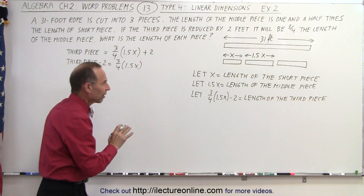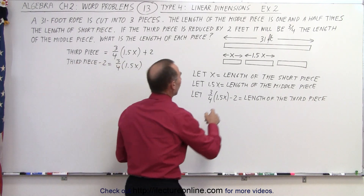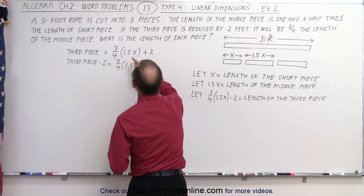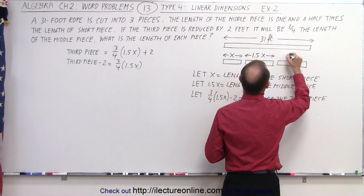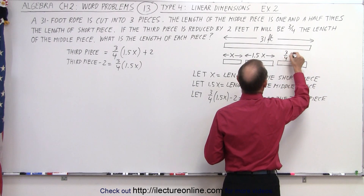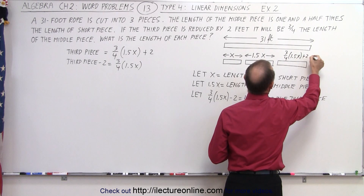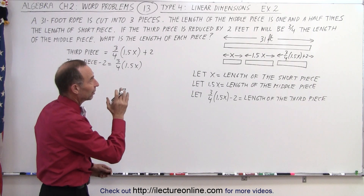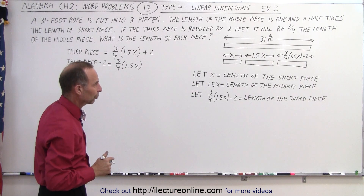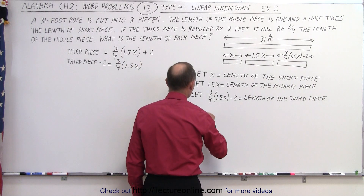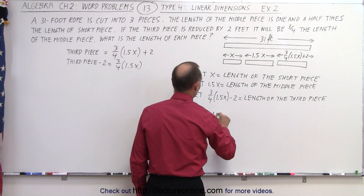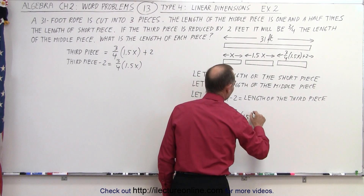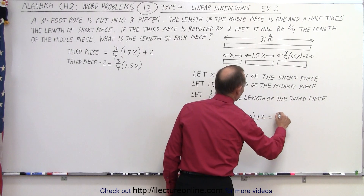It's very important we define each piece carefully. X is the short piece. 1.5X is the middle piece. And three quarters times 1.5X plus two is the third piece. When we add them all together they should equal 31 feet, which gives us our equation: X plus 1.5X plus three quarters times 1.5X plus two equals 31.